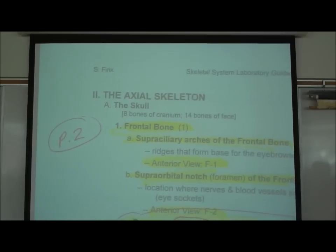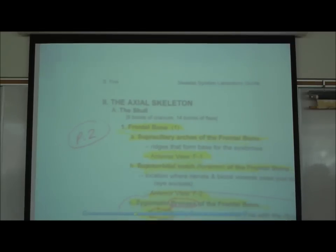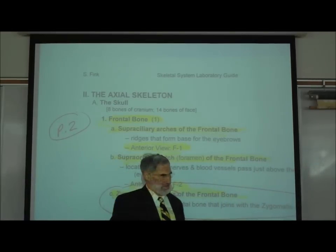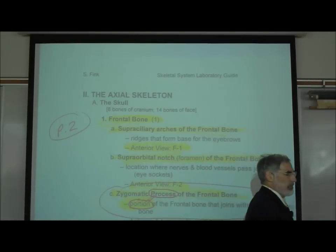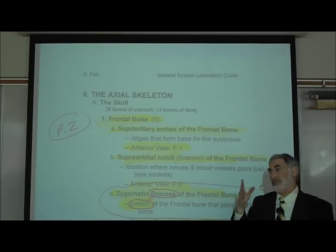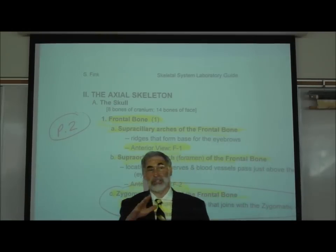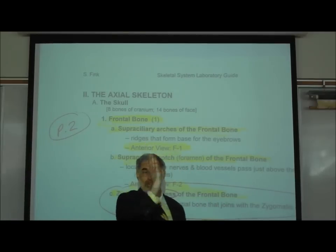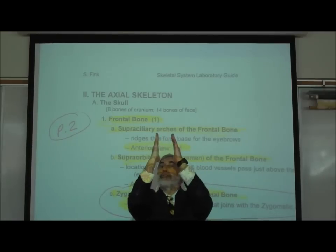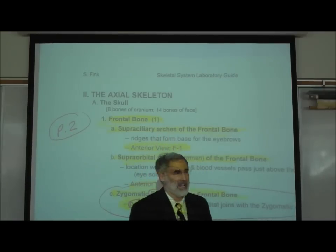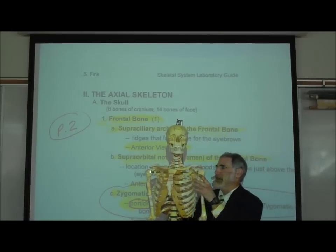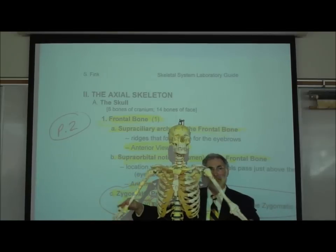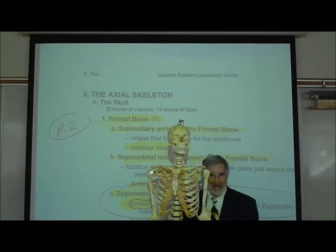Page two of the 22-page handout. The axial skeleton. Last time when we introduced the skeletal system, we divided it into two divisions: the axial skeleton, which forms the vertical axis of the body — the skull, the vertebral column, and the ribcage — and then the appendicular skeleton, which includes the appendages, the arms and legs.